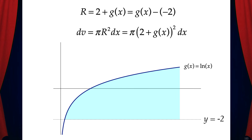Now we can write dv, the volume of one disk, which is pi r squared dx, equivalent to pi times the quantity (2 plus g of x) squared dx.